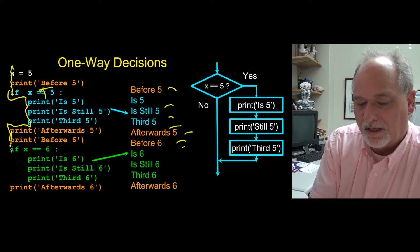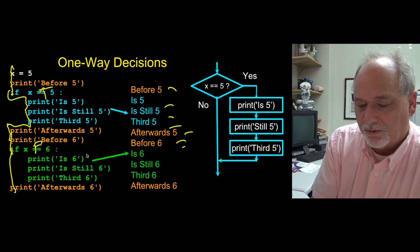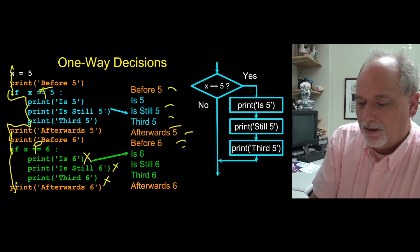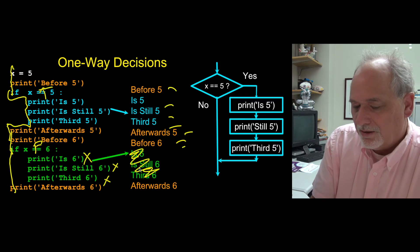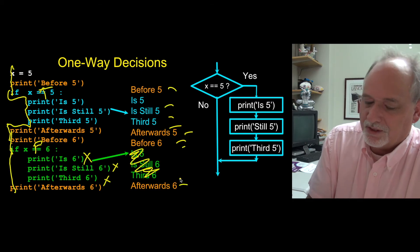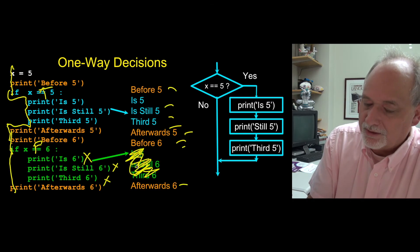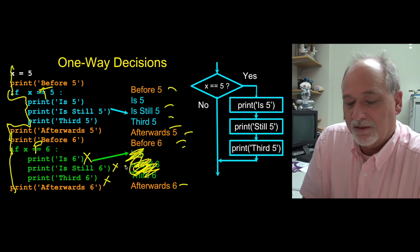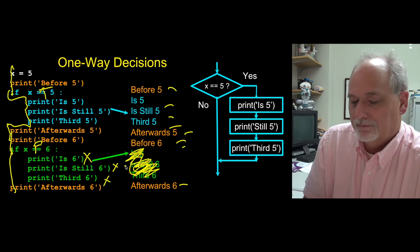So it's going to run all these, and then come back and continue on, and then de-indent, so all this stuff is running. And then it says if x equals 6, well that was false, so that skips all of them. So none of these lines of code run, and it says afterwards 6.